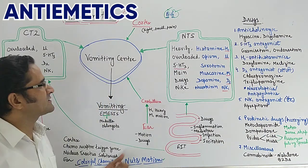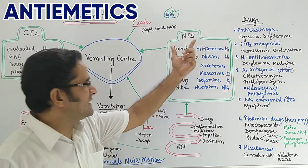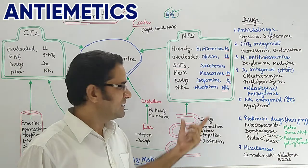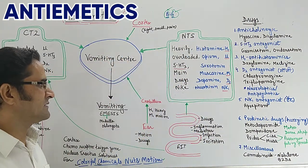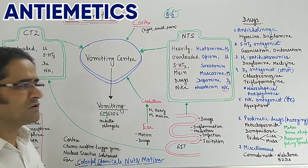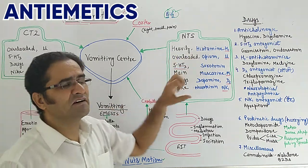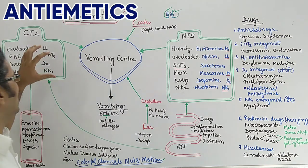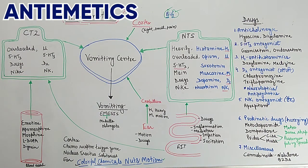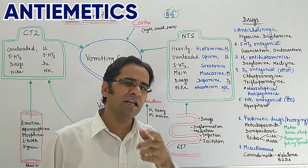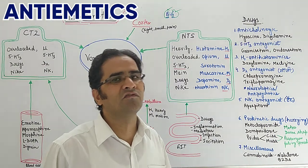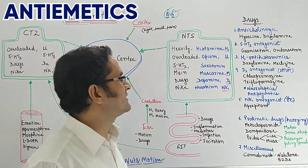Similarly, the nucleus tractus solitarius (NTS) also has different receptors. Drugs or chemicals bind to these receptors, nerve impulses are sent, and vomiting occurs. The question now is: what are the different receptors in the NTS and CTZ? This means we are discussing the targets of anti-emetic drugs, because if we know the receptors responsible for causing vomiting, we can develop an antagonist of that drug.